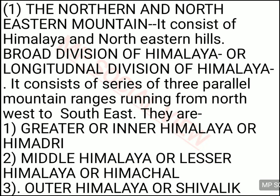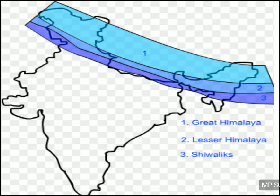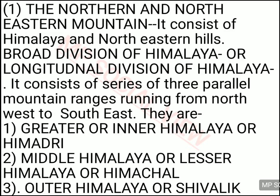First we will see the northern and northeastern mountains — the Himalaya and the northeastern hills in the northeastern states. Broadly, if you divide the Himalaya on a longitudinal basis — longitudinal meaning long, long divisions — the Himalaya can be divided from northwest to southeast into three parts. You can see the three long sections of the Himalayas in the diagram. This is called the longitudinal division of Himalaya.